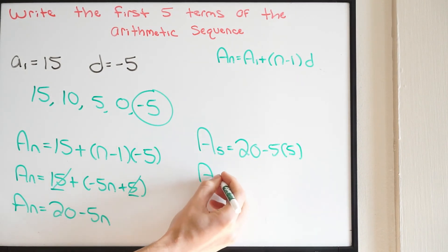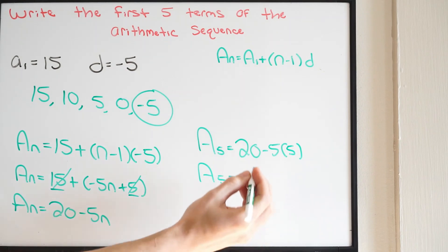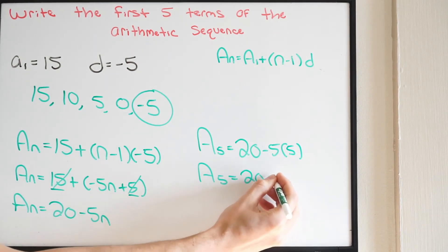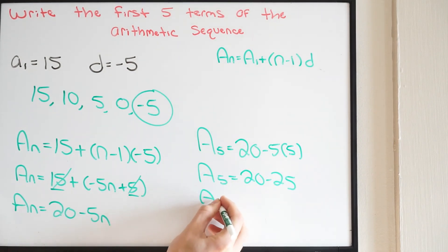So A of 5 is going to be 20 minus 25, which we know is going to be A of 5, equal to negative 5. So here it is.